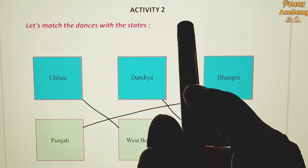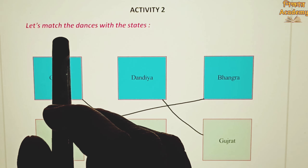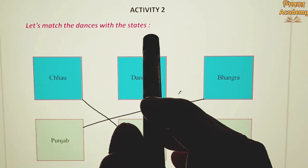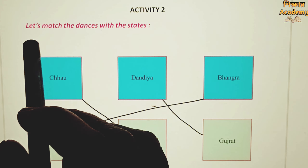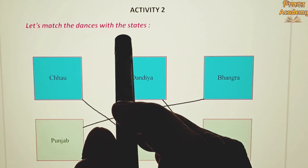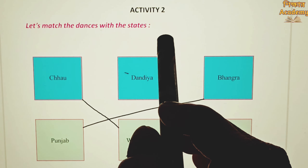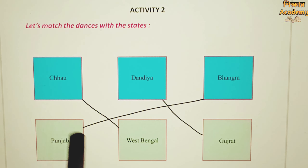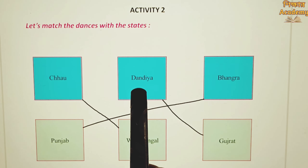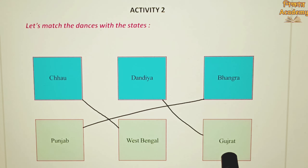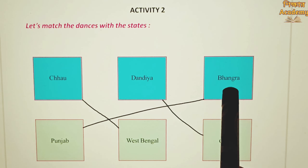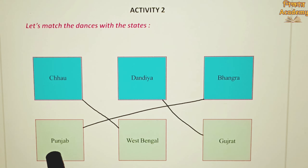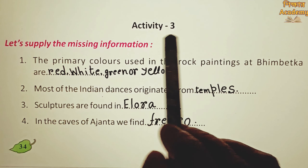Activity 2. Let's match the dances with the states. Chow dance belongs to West Bengal. Dandia belongs to Gujarat. Bhangra belongs to Punjab.